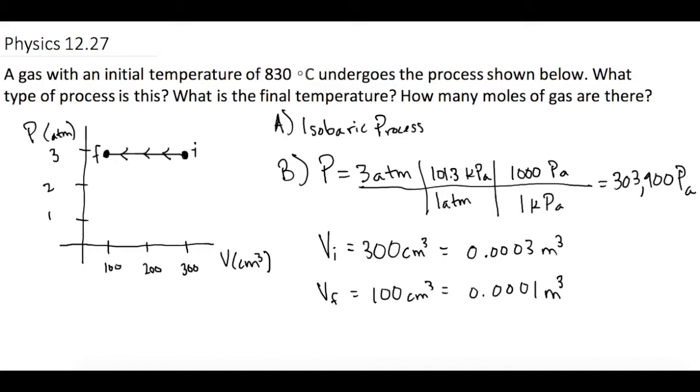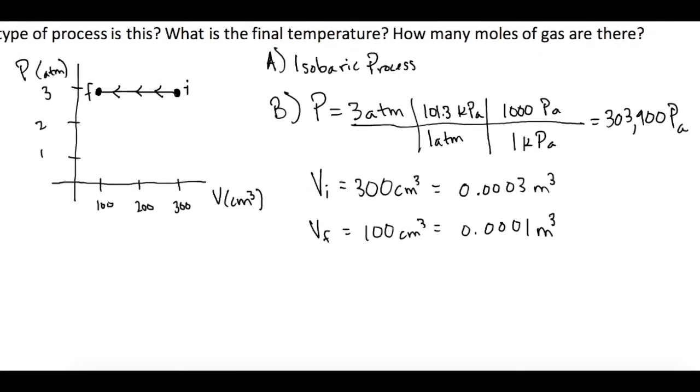So they want, what is the final temperature? They don't give us any sort of moles for this, and so we can use this other relationship that's given to us with ideal gases. PV over T initial is equal to P final V final over T final.